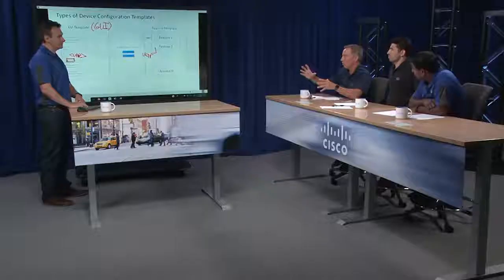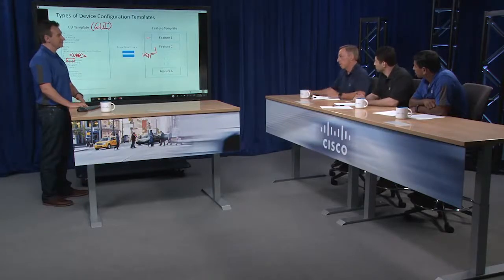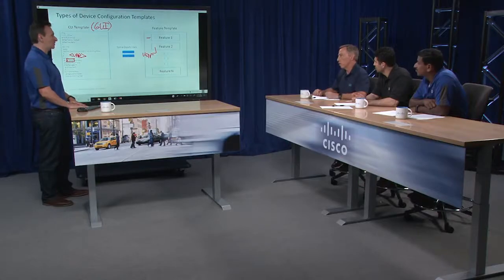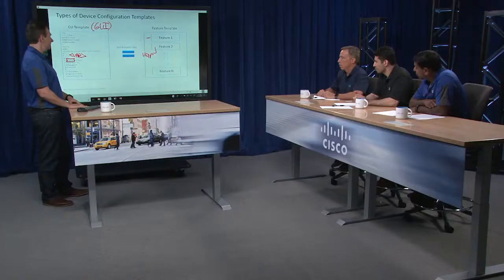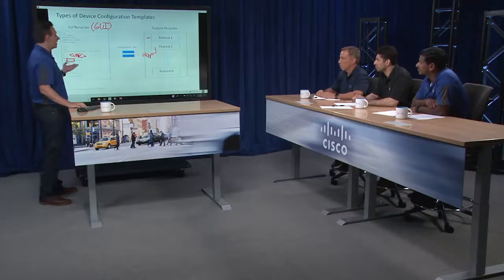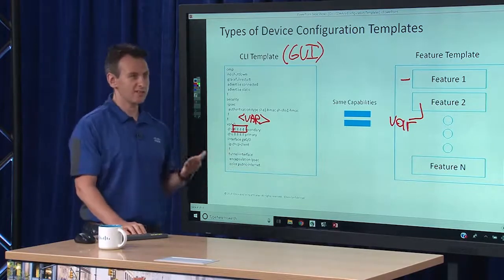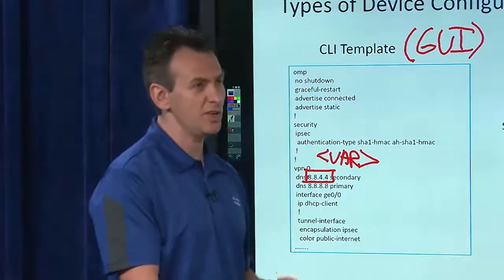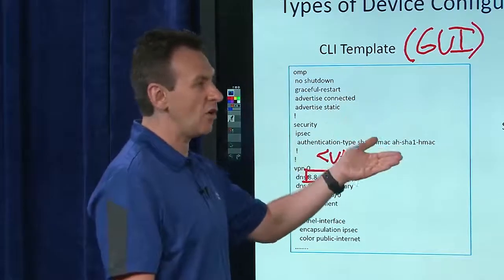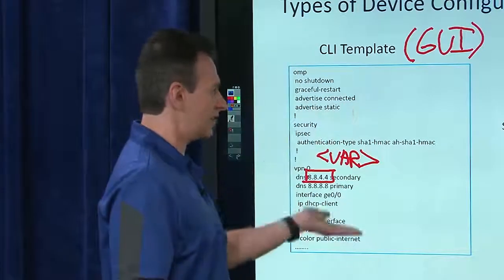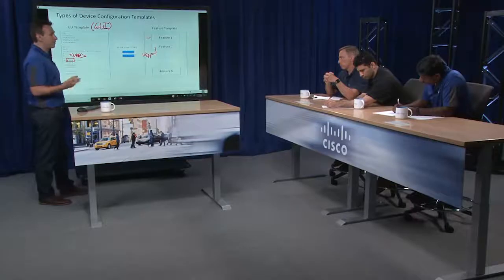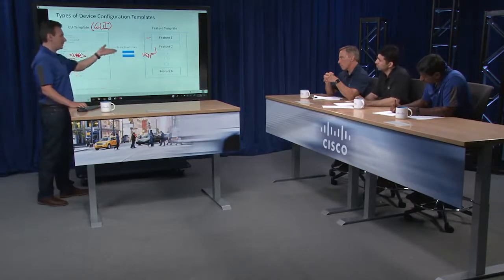You also have to consider your operations people. If you're an engineer or architect who's been doing years of CLI configurations, you may be comfortable for day-zero provisioning, but at some point you'll hand that over to operations. If they're only comfortable with the GUI, they need to know how to navigate through it since they'll be making changes like turning interfaces up and down. One thing not mentioned before is that all of this is also accessible through REST APIs — so if you're a DevOps-approach type of customer focused on programmability, you can execute configurations through API calls into vManage.